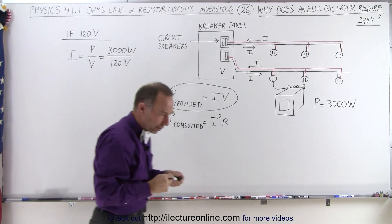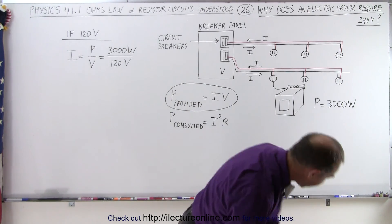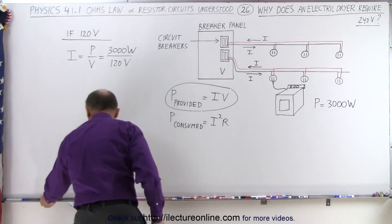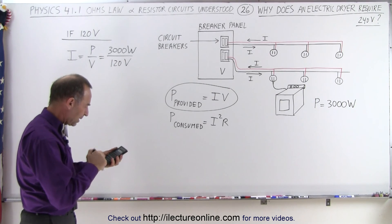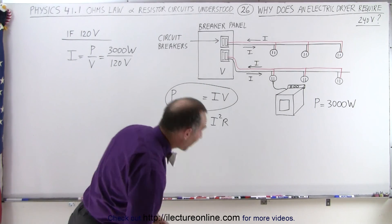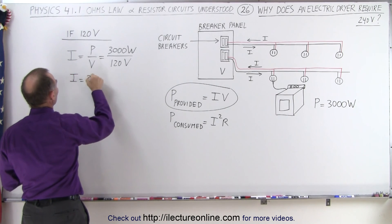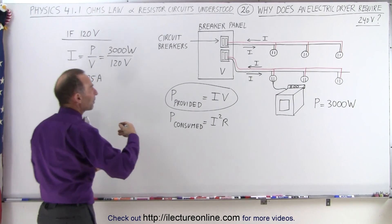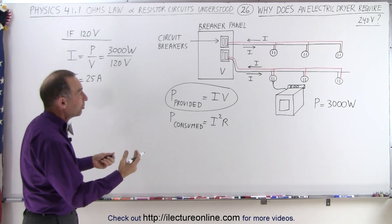Let's see how many amps that would require to run that. If I can find my calculator, I would be happy - it's right over here. All right, so 3000 divided by 120, well that's 25 amps. That's a lot of current, so I required would be 25 amps. So the typical 15 amp or 20 amp breaker would not be sufficient.